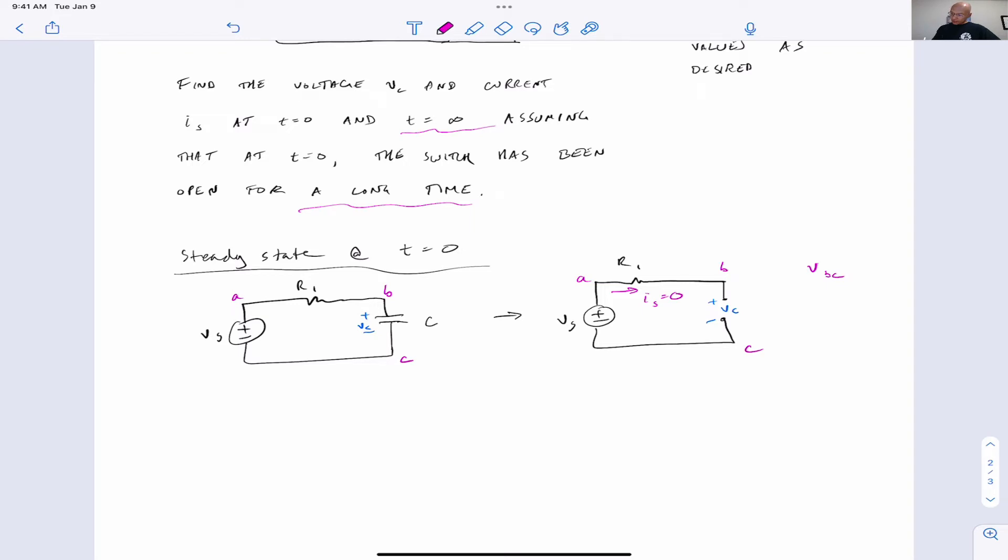And then VC equals VBC. And then we can get this from a Kirchhoff's voltage law analysis. So we know that if IS equals zero, then the voltage drop here is zero. So we're left with the following KVL equation.